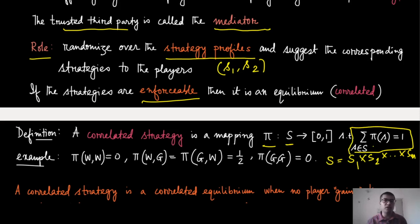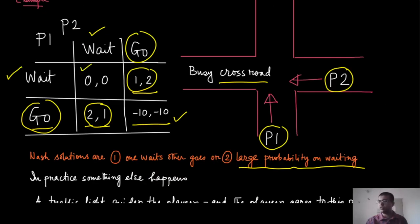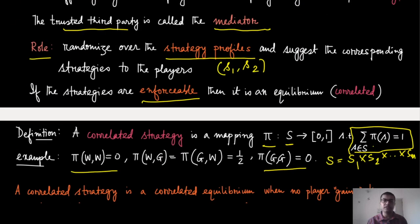To give an example in the wait-and-go game, the randomizing device puts zero probability mass on both waiting and both going. It puts half-and-half weight on go-wait and wait-go. That is a correlated strategy — and there are of course uncountably many other possible distributions.